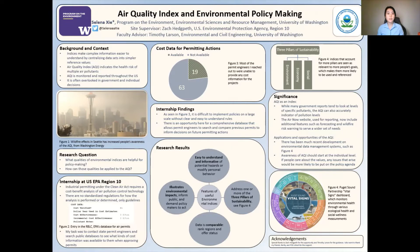To explain, industrial permitting under the Clean Air Act requires a cost-benefit analysis of air pollution control technology to determine which technologies are economically feasible to reduce pollution in those facilities. There are no standardized regulations for how the analysis is performed or determined, only guidelines. Additionally, permitting decisions are done mostly by state and local governments and overseen by the EPA.